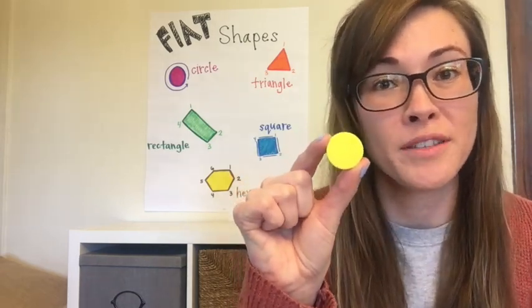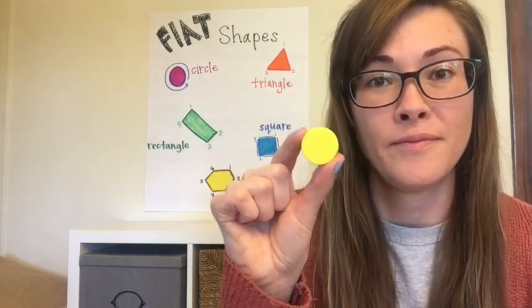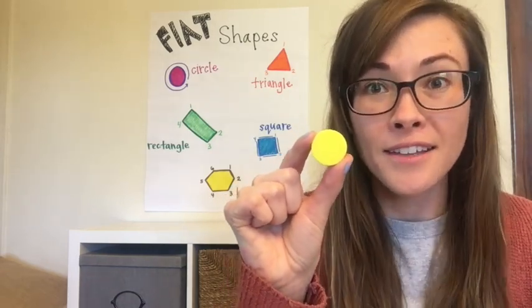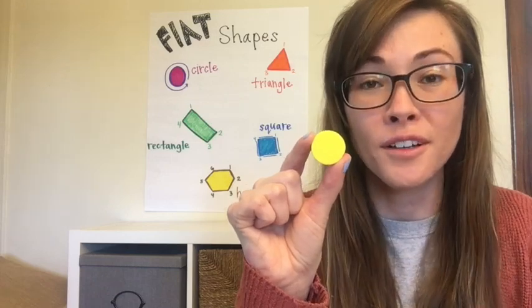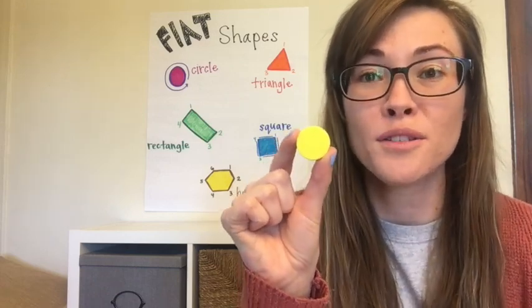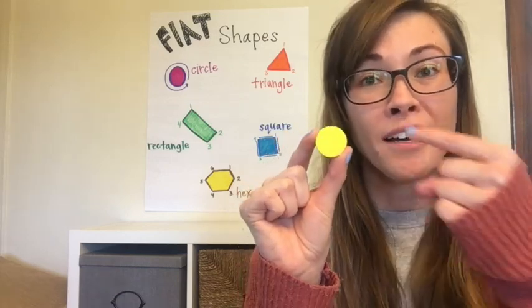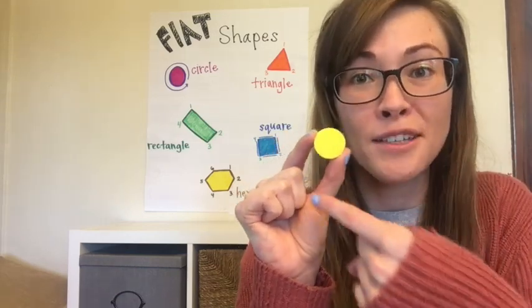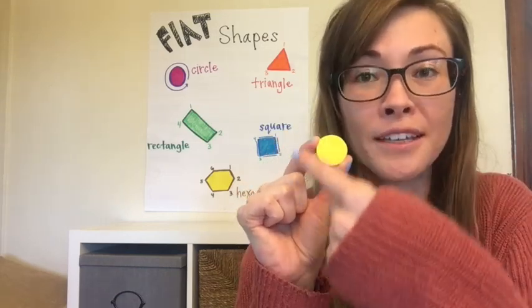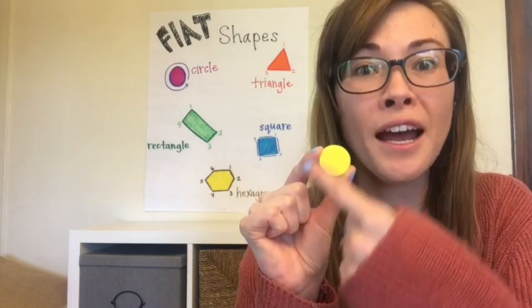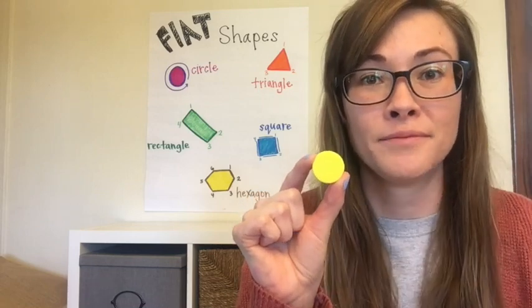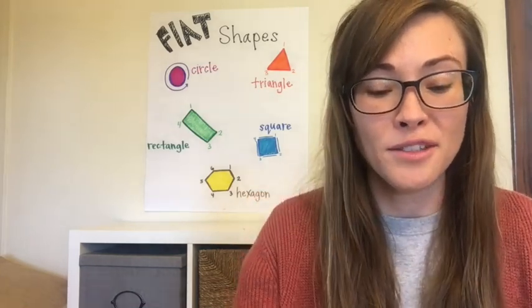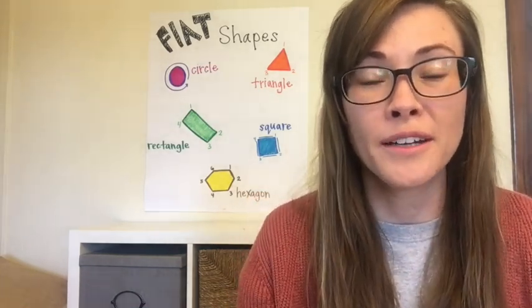What shape is this? It's a circle. I know it's a circle because a circle is round. Let's try another one.